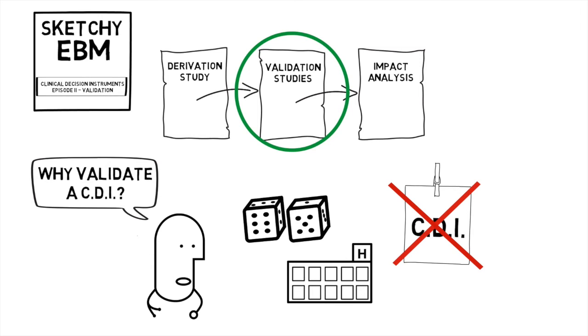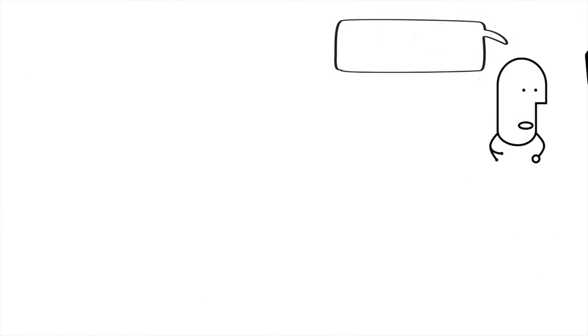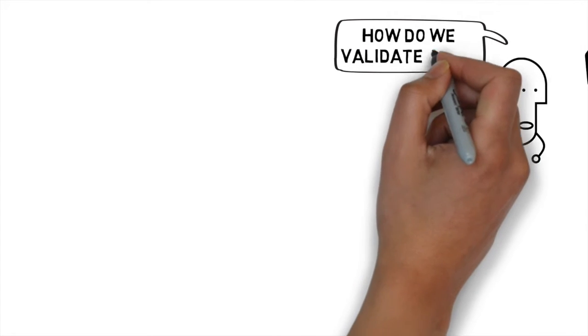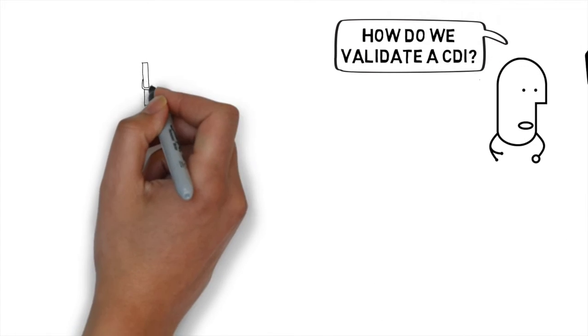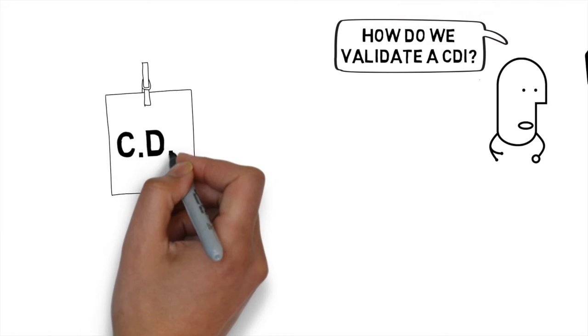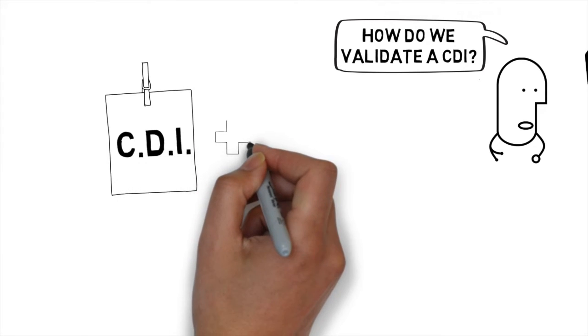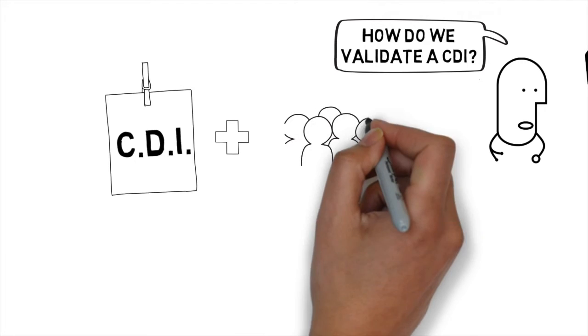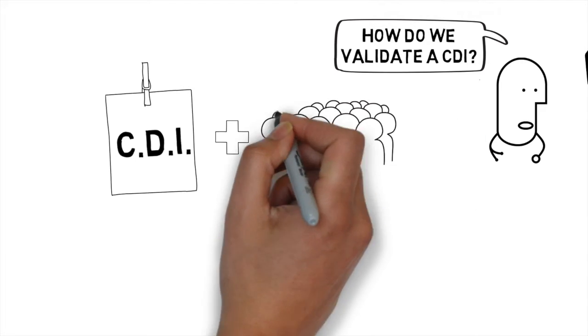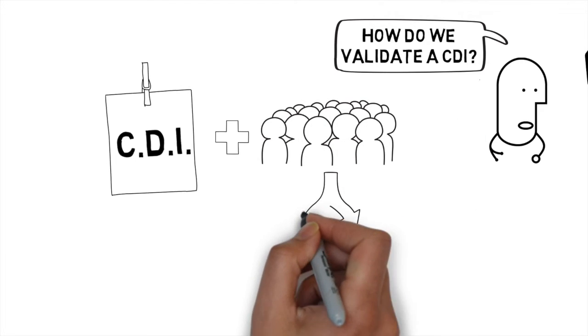With these reasons in mind how do we go about validating a clinical decision instrument? In very simple terms we need to take the clinical decision instrument and apply it to the population of patients for which it was intended. We then follow the patient population forward and measure the outcomes whether they're diagnostic or prognostic and see how well that clinical decision instrument performed.